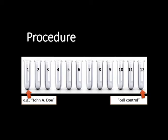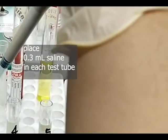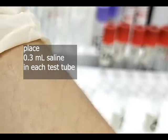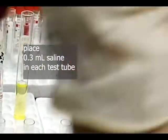For the procedure: First, number and label 12 tubes with the patient's initials. Place the patient's full name on tube number 1 and 'cell control' on tube number 12. Second, place 0.3 ml of saline in each tube.